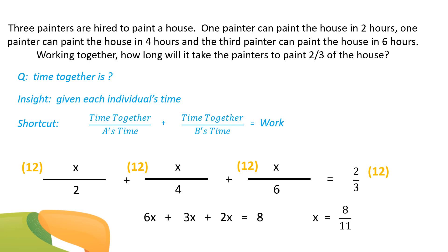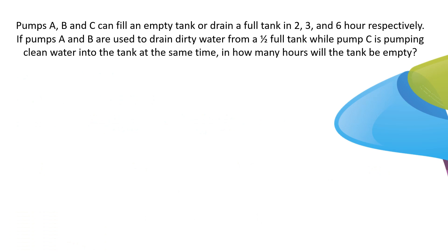Some of you might ask: we're solving for two-thirds of a house, but the individual times are in terms of painting one whole house. It turns out it doesn't matter, so long as all the individual times are in terms of the same amount of work. In this case, each painter's time is in terms of one house, so it works out fine.